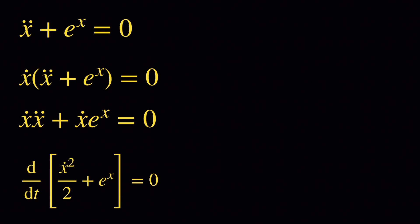Now, we know that we are differentiating something with respect to t and we get 0, which means that something must be a constant. Everything between brackets is obviously positive, so we can assume that x-dot squared over 2 plus e to the x is equal to a squared, with a being a positive number.